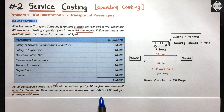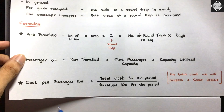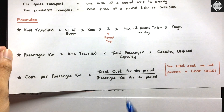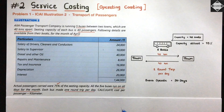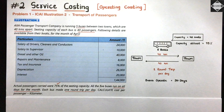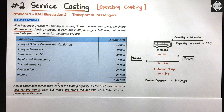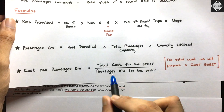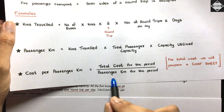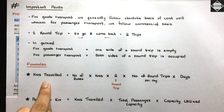We need to calculate cost per passenger kilometer. For that, we need: total cost for the period (given in the April data) and total passenger kilometers for the period as the denominator. Always calculate the denominator first - total passenger kilometers for the month of April. To calculate this, we first calculate kilometers traveled.